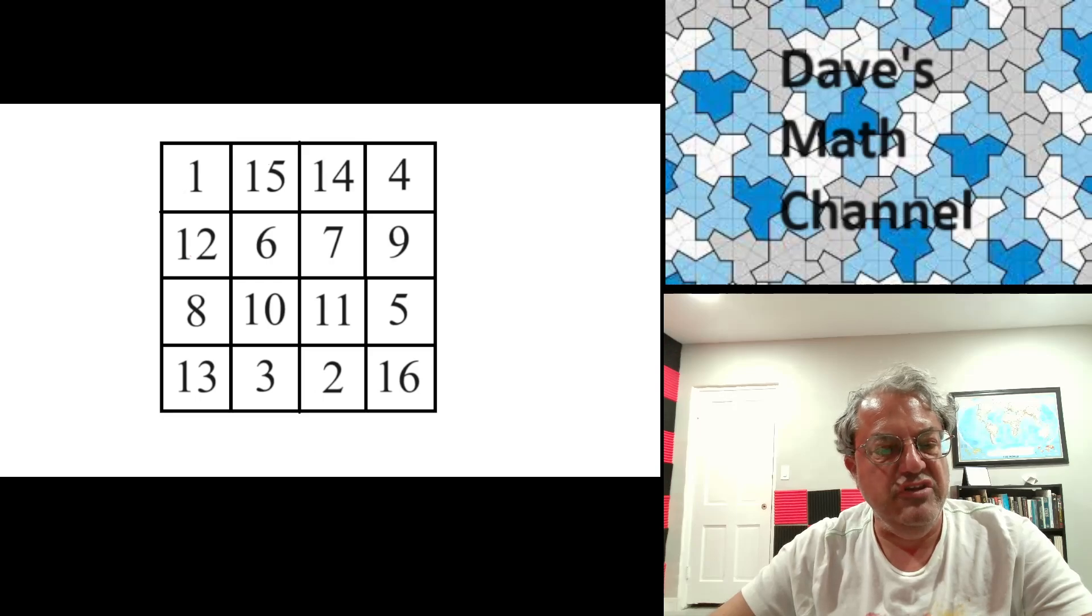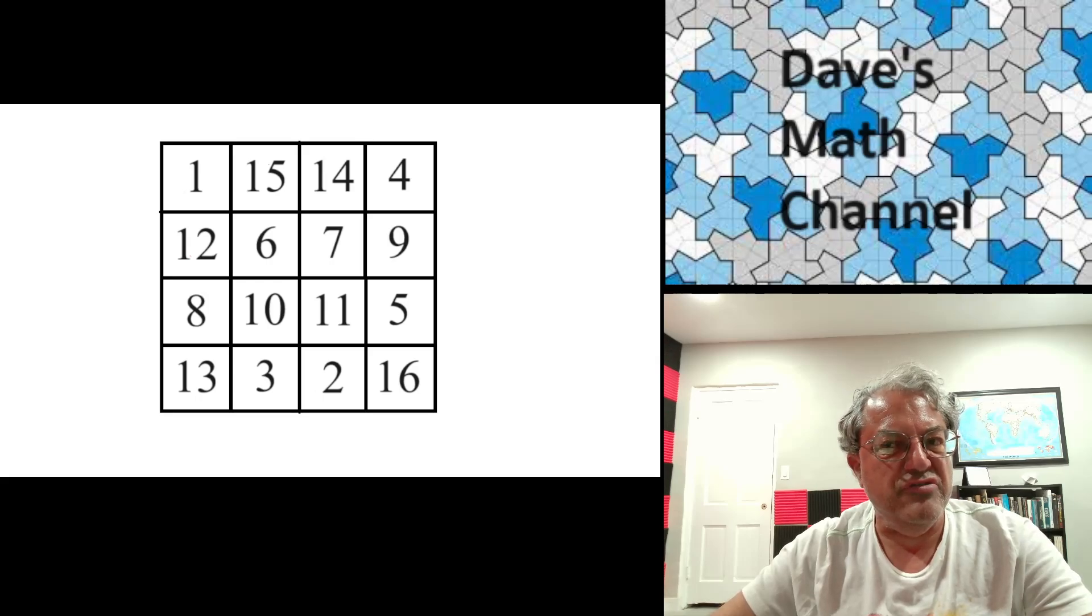It doesn't have quite as many nice properties as Durer's square, which I talked about earlier. That's the one with the most possible sequences of four numbers that add up to 34. But this has some additional ones, so I think it's a nice magic square, and it's easy to construct.